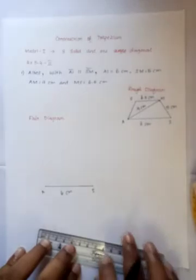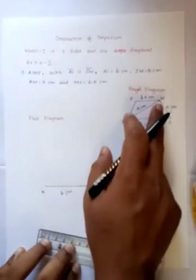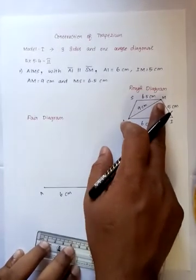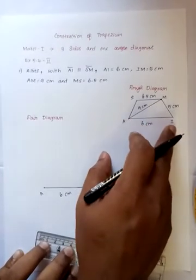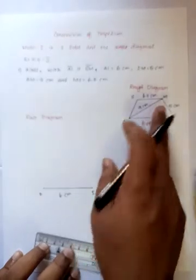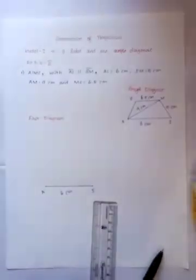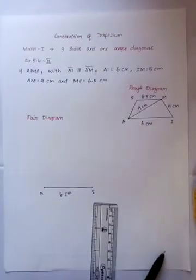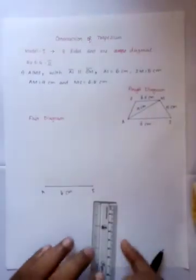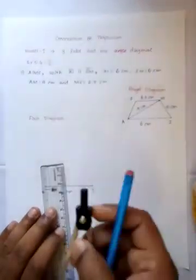Next, from point I, mark IM equal to 5 cm. From point A, mark AM equal to 9 cm. Mark point M where both arcs intersect and draw it.